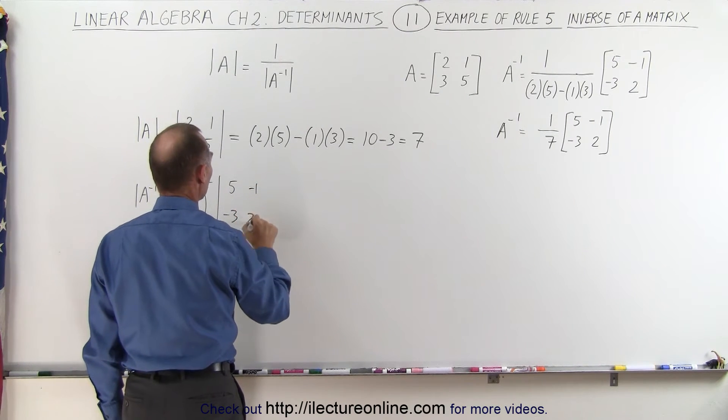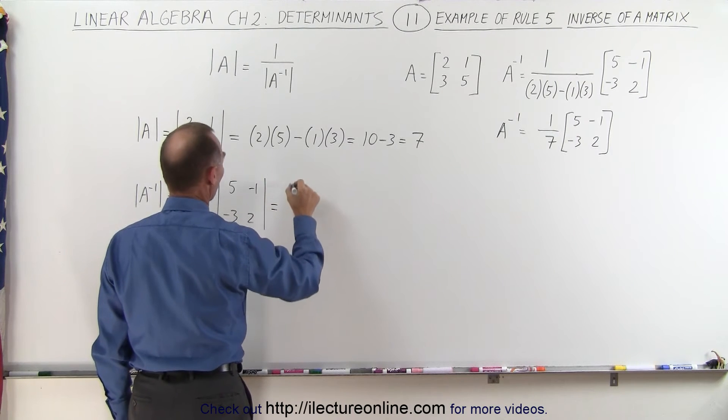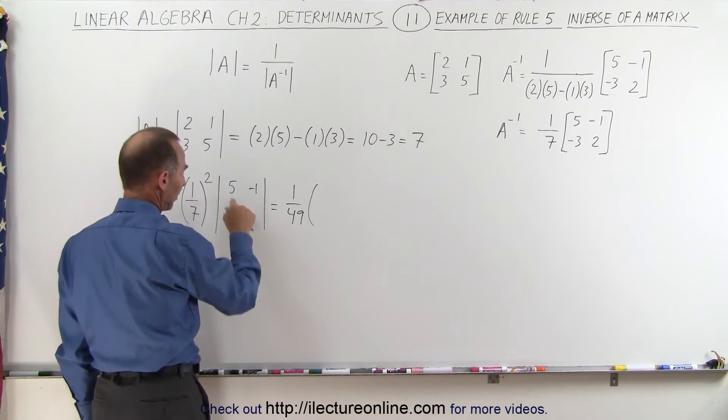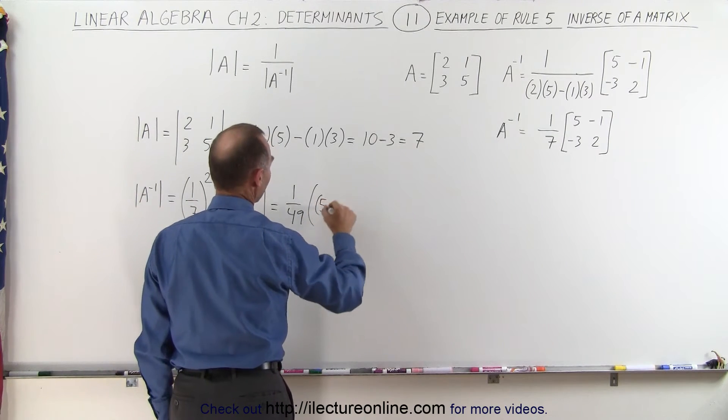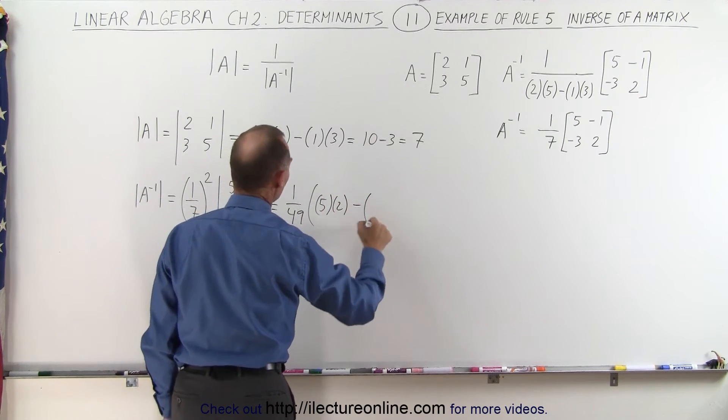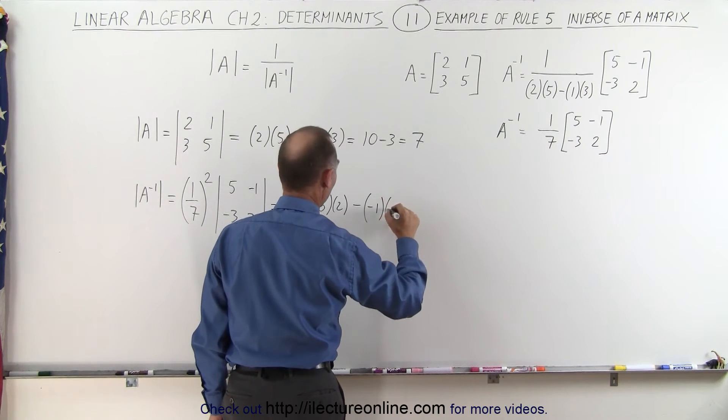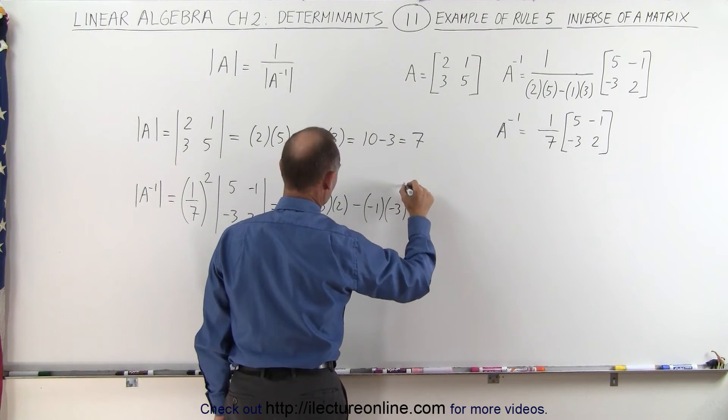This is equal to 1 over 49 times the product of these two, that is 5 times 2, minus the product of those two which is minus 1 times minus 3 like this.